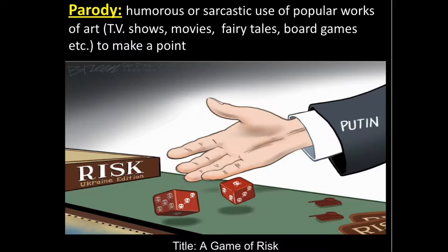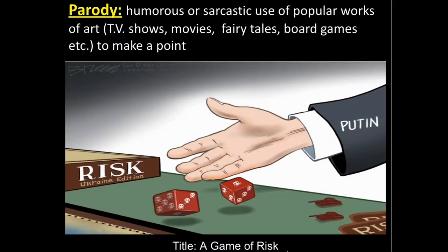Let's take a look at this example. Title: A Game of Risk. When I look at what's going on, I can see that there's a hand playing the game of Risk, where the objective is to gain territory. When I look closer, I can see that it's the Risk Ukraine edition right here. I can see that it's Vladimir Putin who is playing the game and using a Soviet-style kind of dice, and the tanks are moving towards it, suggesting more. By using this board game that many people know, it helps us understand the point that this author is trying to make, which is it's a risky game that Putin's playing with Ukraine.